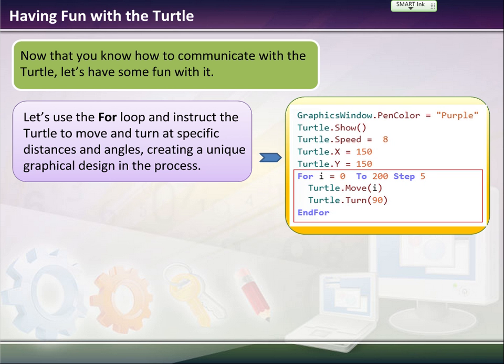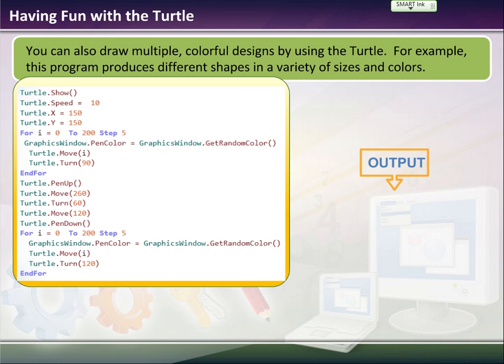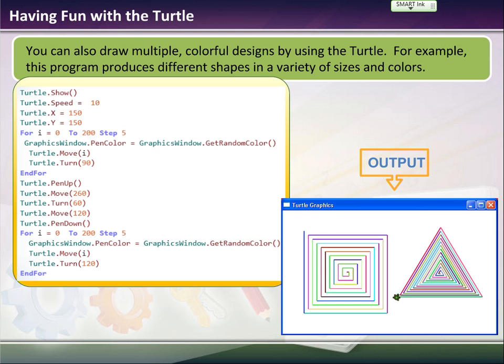So, now one thing we could do is we could insert a for loop and instruct the turtle to move and turn at specific distances and angles and create unique graphic designs. And you can also add color to your design by putting in the value of pen color in the property of the graphics window object. And so, here's some examples of some things you could do. Basically, you show the turtle, you put it at a specific location, you run the for, end for loop, and it will choose a random color, and then it will move I units and then turn 90 degrees.